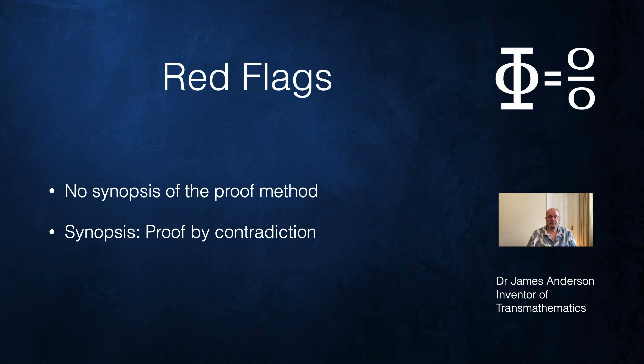And another red flag is that these proofs don't have a synopsis of the proof. They don't say this is a proof by contradiction. If they did say it was a proof by contradiction, you would immediately spot the error as you will do in a few minutes.